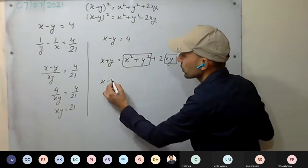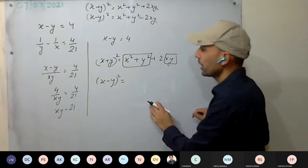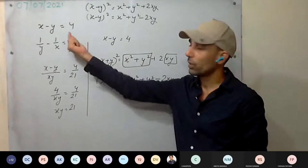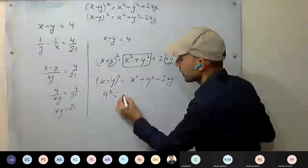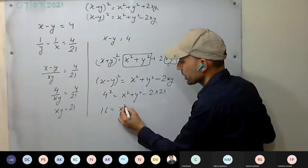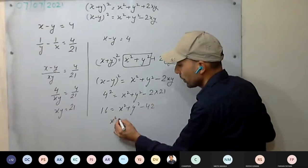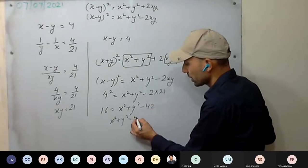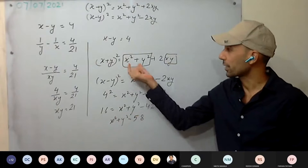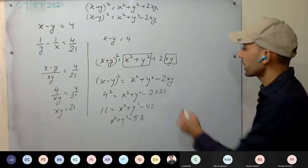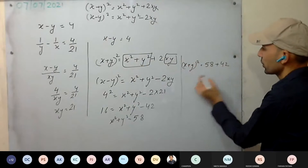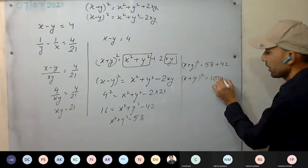Using the identity: x minus y whole squared equals x squared plus y squared minus 2xy. Substituting: 4 squared equals x squared plus y squared minus 2 times 21. So 16 equals x squared plus y squared minus 42. Therefore x squared plus y squared equals 16 plus 42, which is 58. We have obtained the value of x squared plus y squared as 58. Now with xy equal to 21, we can find x plus y squared: 58 plus 42 equals 100.